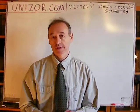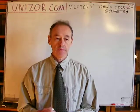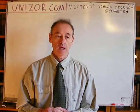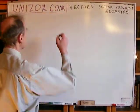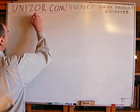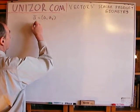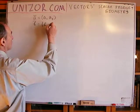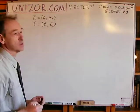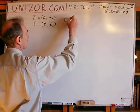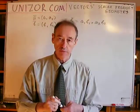I will continue talking about the scalar product of two vectors in two and three dimensional cases. The most important result of the previous lecture was that if you have two vectors A and B in the two-dimensional case, with coordinate representation A1, A2 and B1, B2, then their scalar product is A1·B1 + A2·B2.